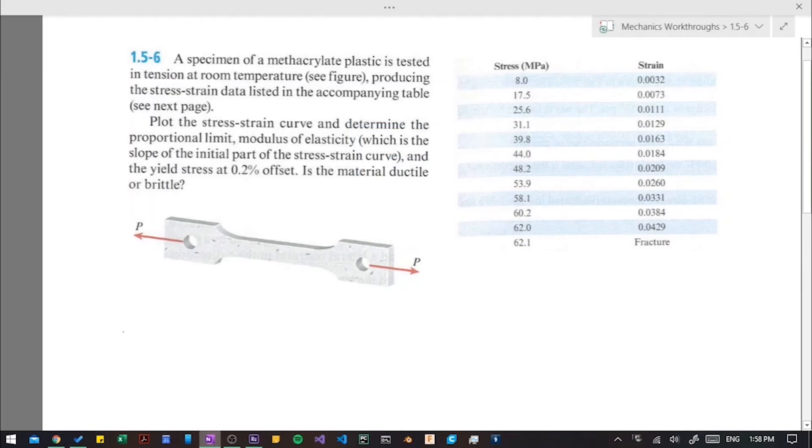This is example 1.5-6. A specimen of methacrylate plastic is tested in tension at room temperature, producing the stress strain data listed in the accompanying table.